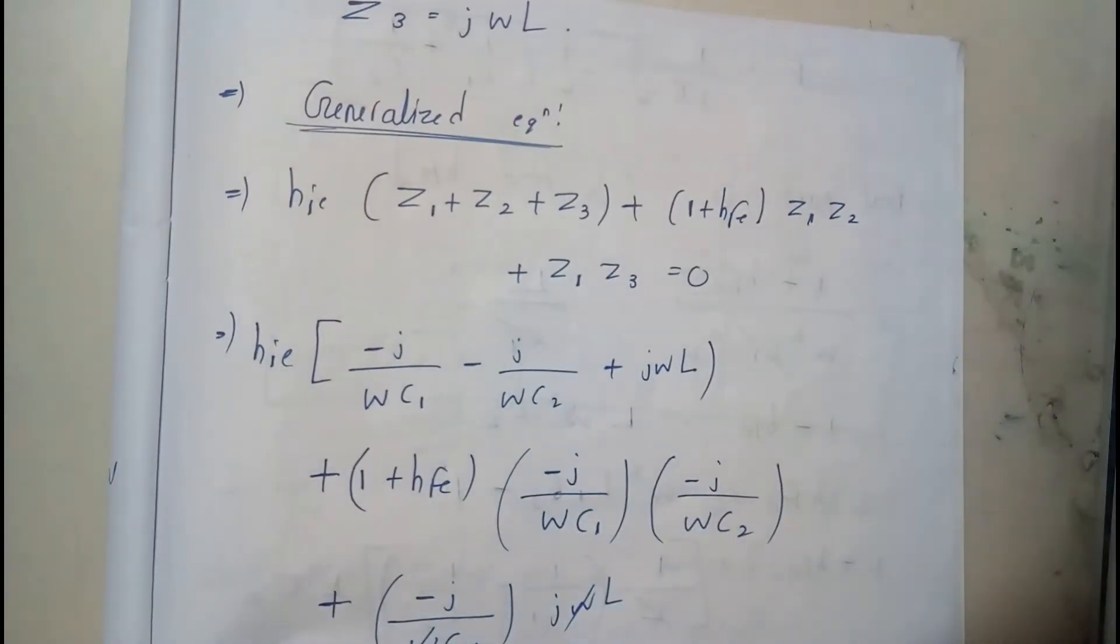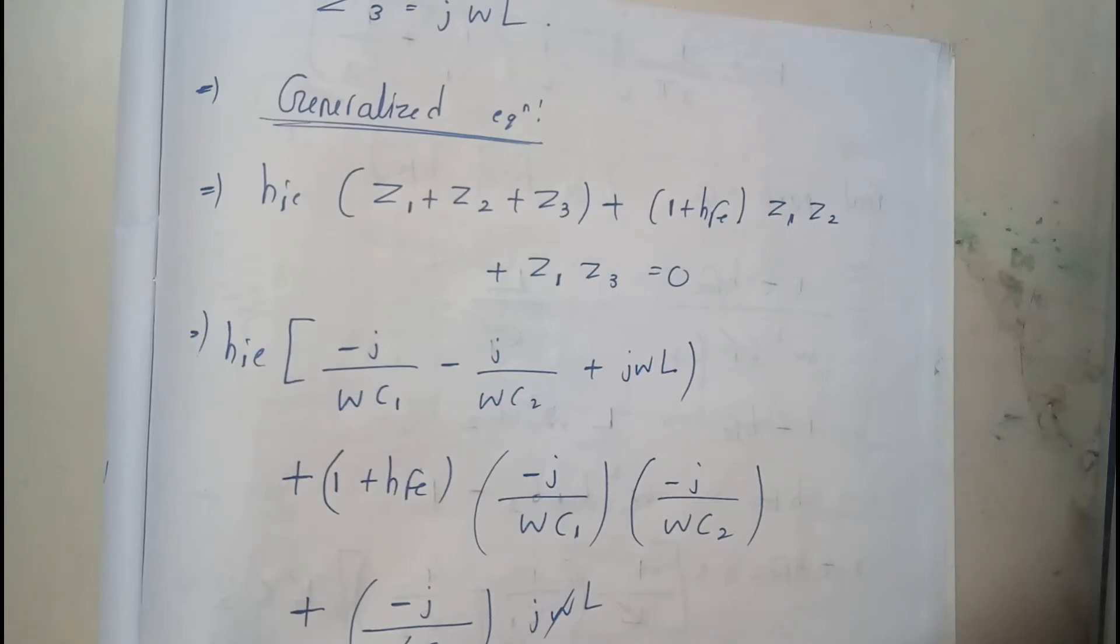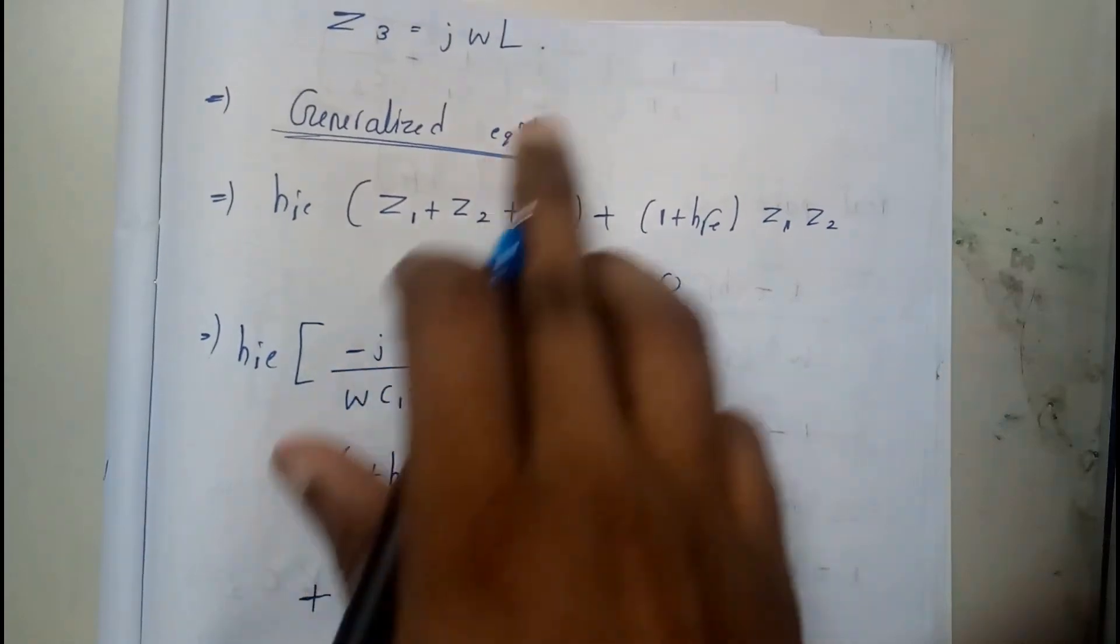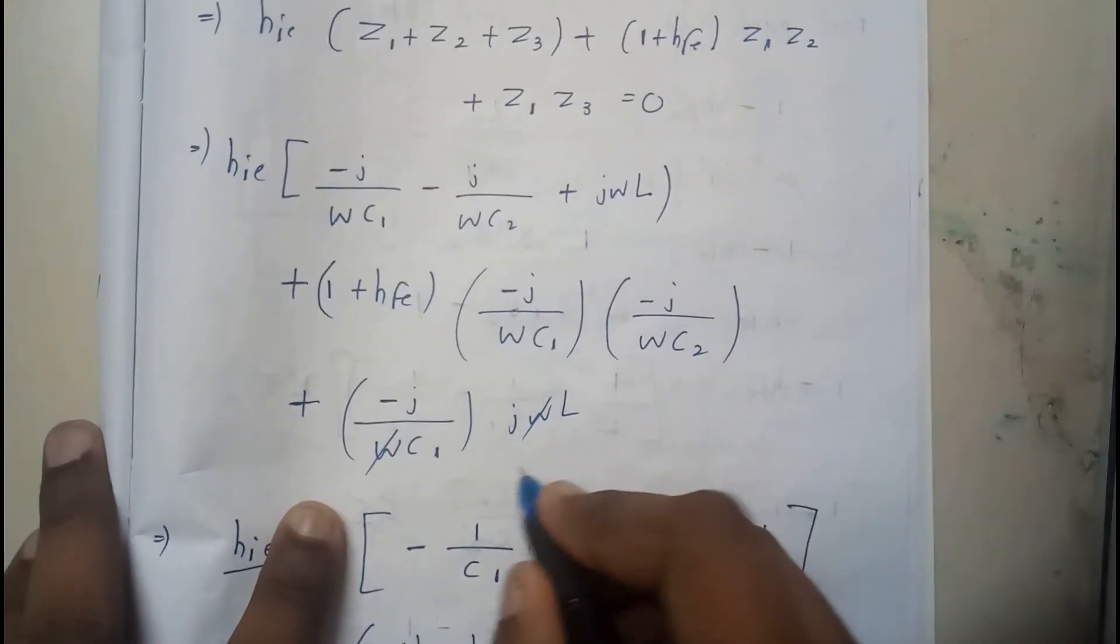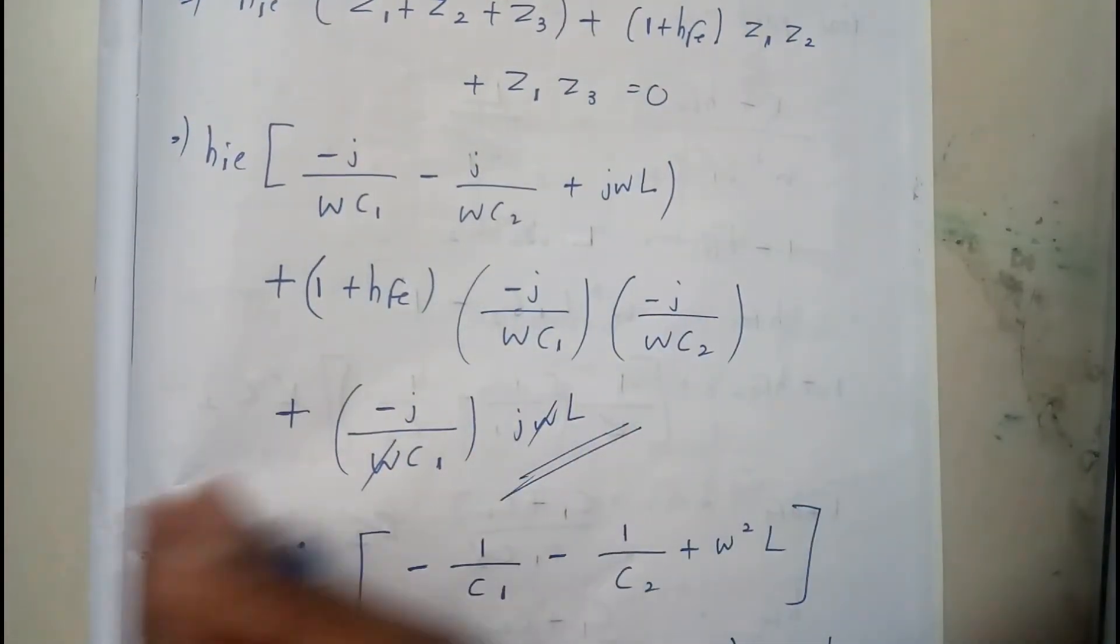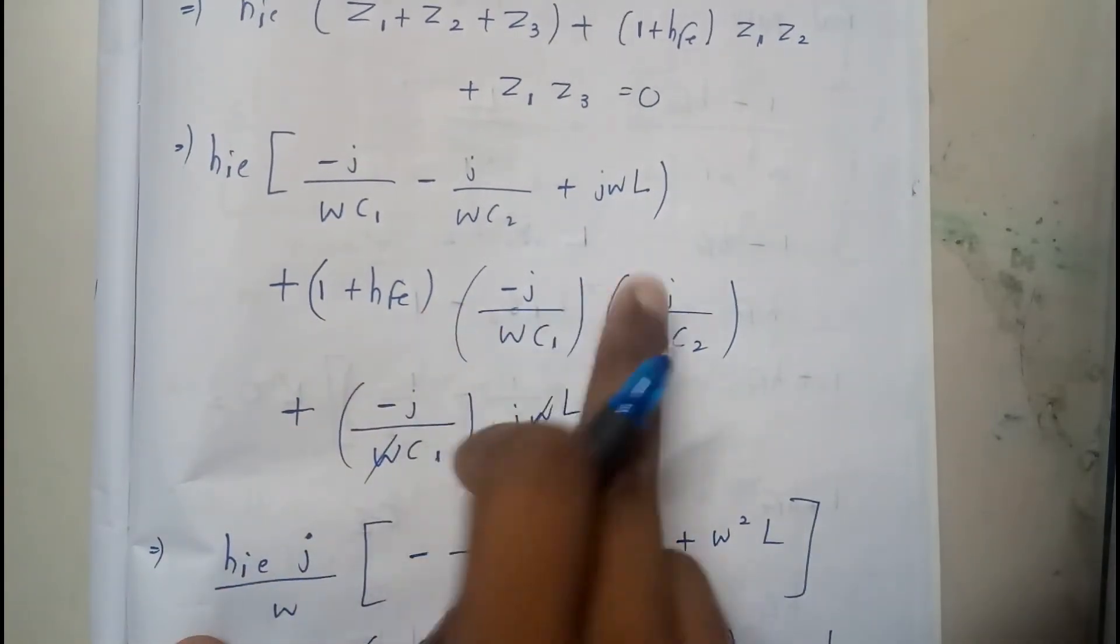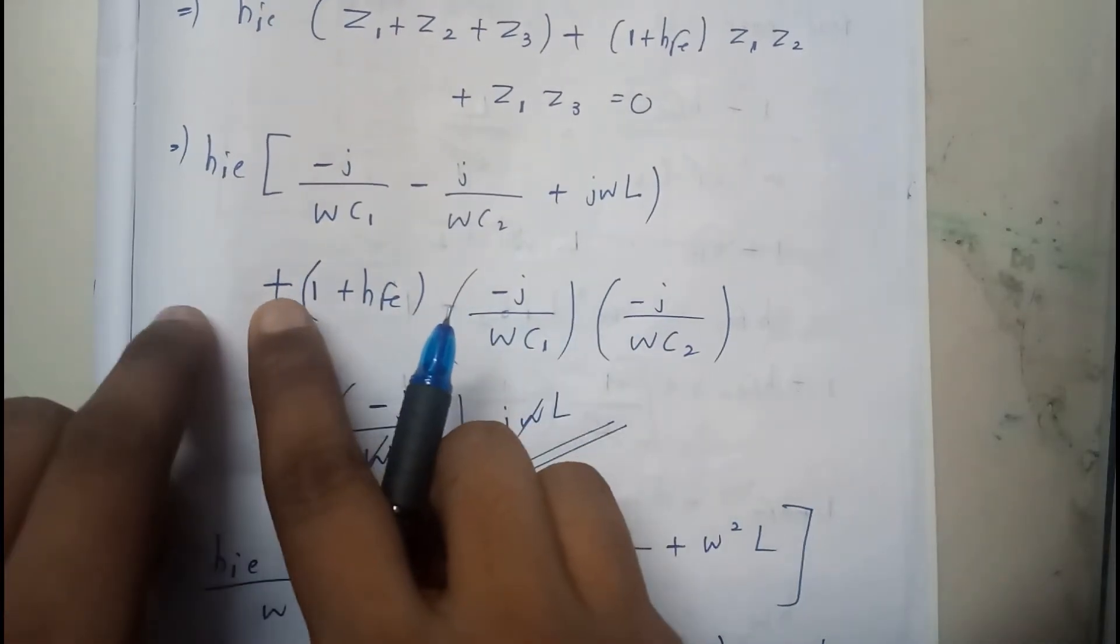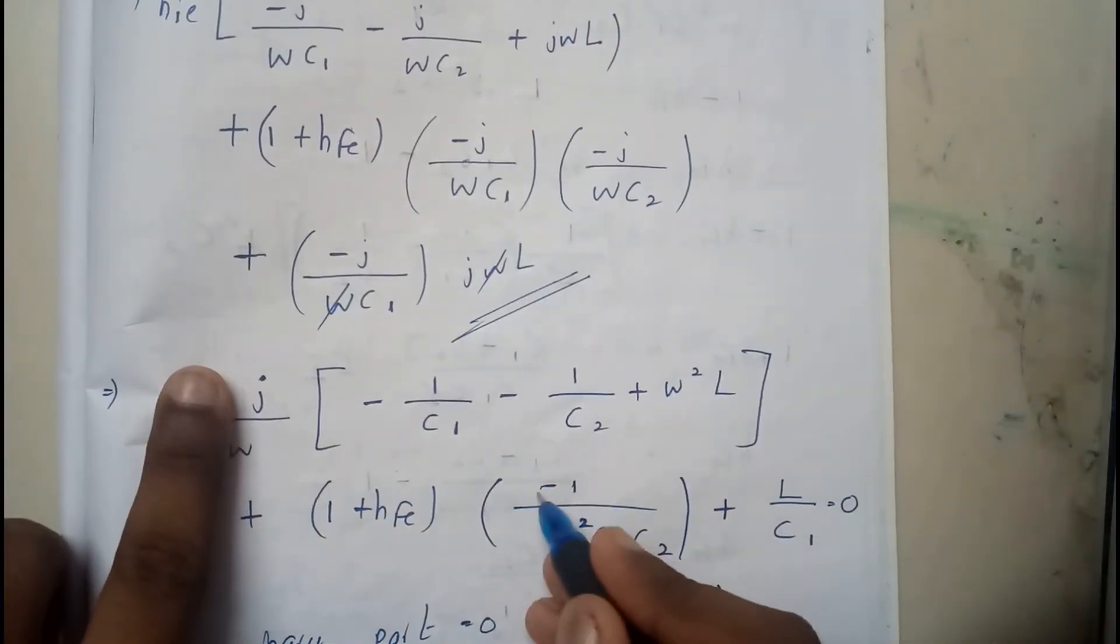So now replacing the values of Z1, Z2, Z3 with the above values. So we are going to get an equation like this. So in this, take as many J's possible to the starting point. So we got a J here and these two J's multiply to form minus. So minus into minus plus minus into plus minus. So we are going to get minus.